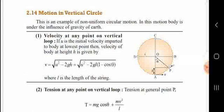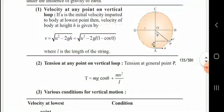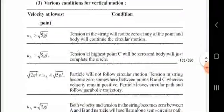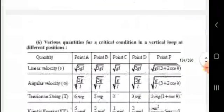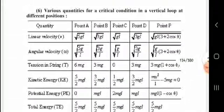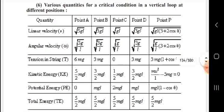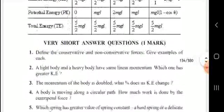Next, motion in a vertical circle. This is an example of non-uniform circular motion. The chapter provides formulas for various quantities at different positions under the critical condition in a vertical loop — you should study those.